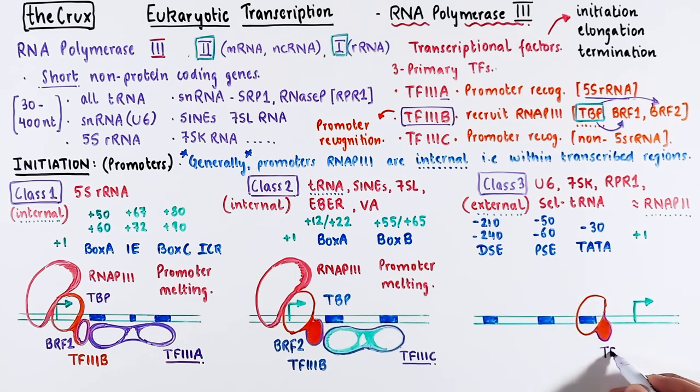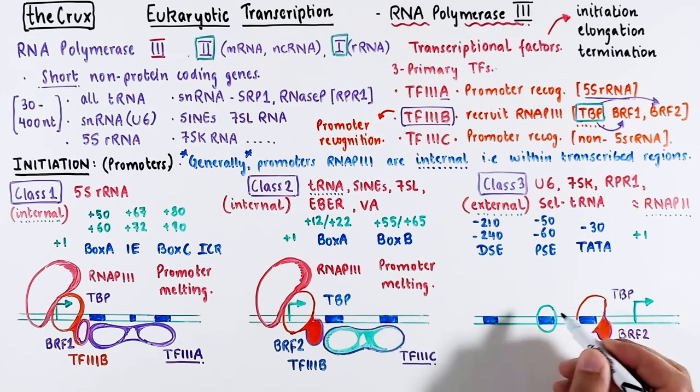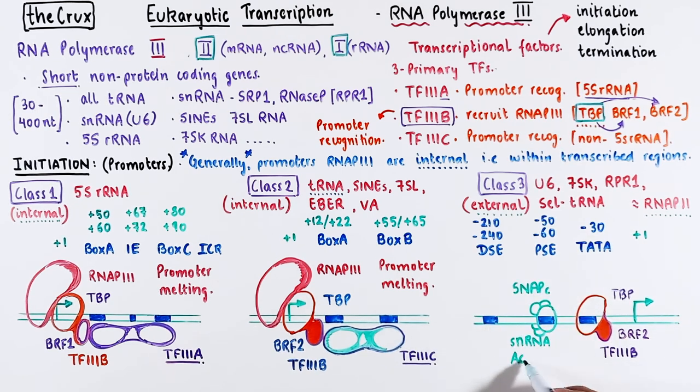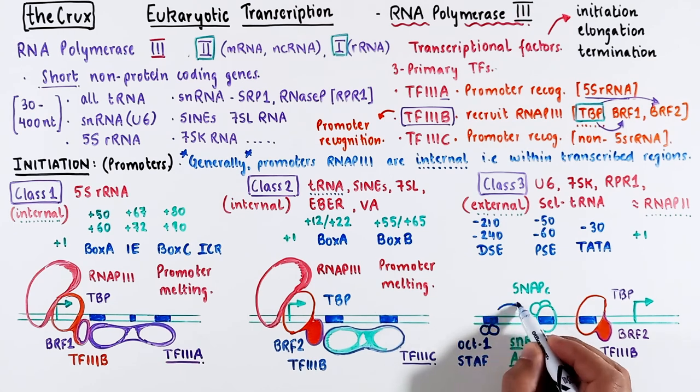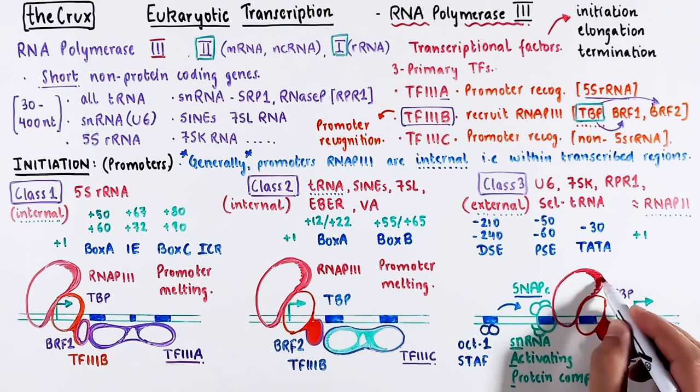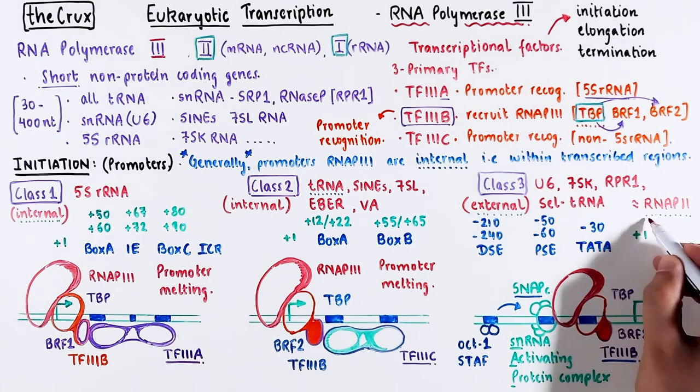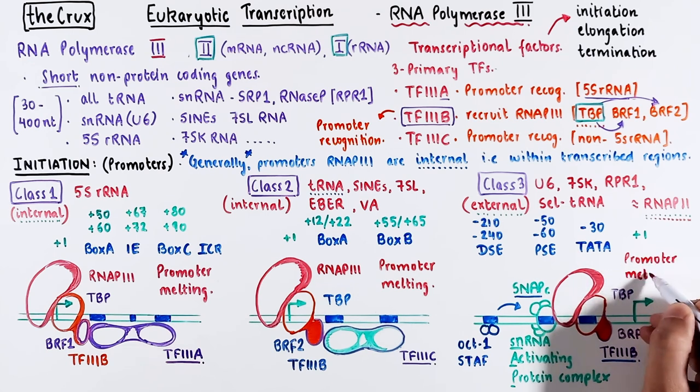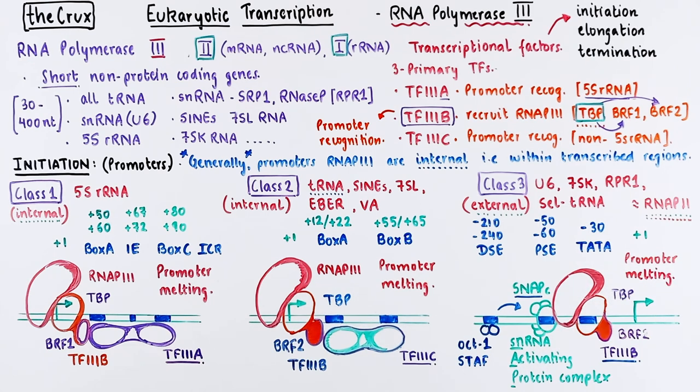Class 3 promoters are recognized by the TATA binding unit of the TF3B. Usually, it comes with the BRF2 version. The proximal sequence element is occupied by a multi-subunit complex called SNAP-C, which acts as a helper or activator. If distal sequences are present, OCT1 and STAFS assist in the speedy assembly of SNAP-C, facilitating in a faster loading of POL3. This assembly resembles the POL2 mechanism, but with fewer factors involved. Once assembled, this complex opens the promoter for the next steps.